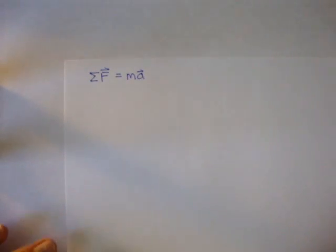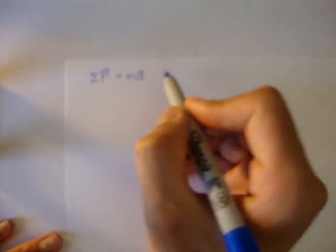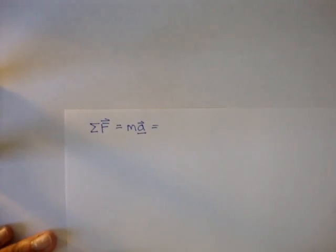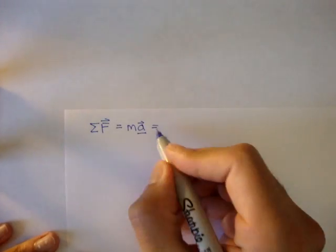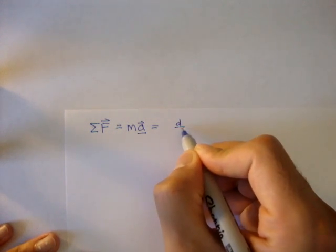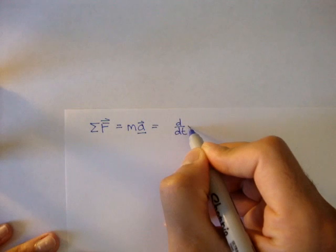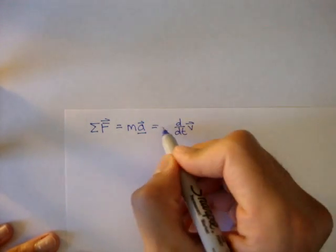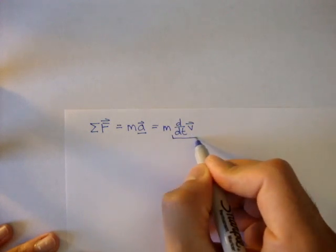And we know from dynamics that acceleration we can write as the derivative of the velocity, times mass. So this is actually acceleration.